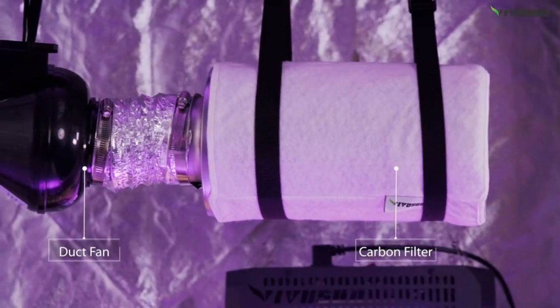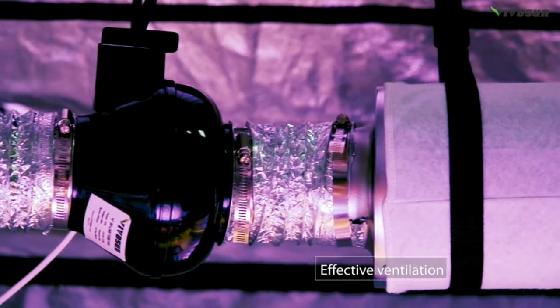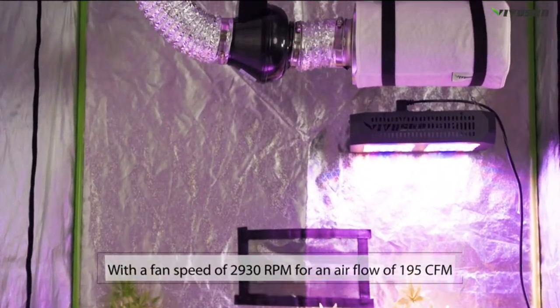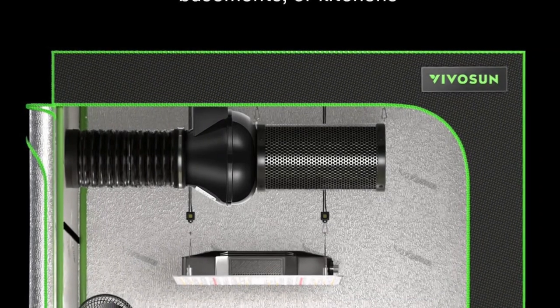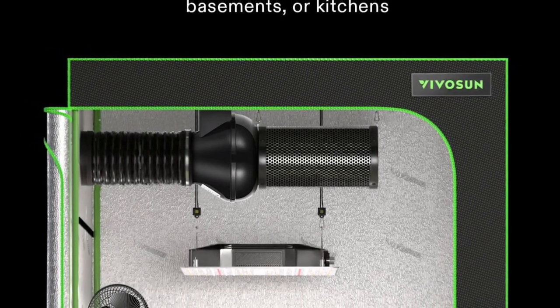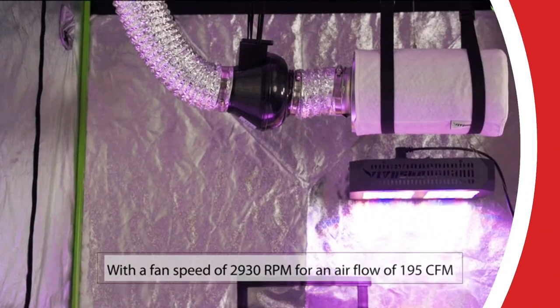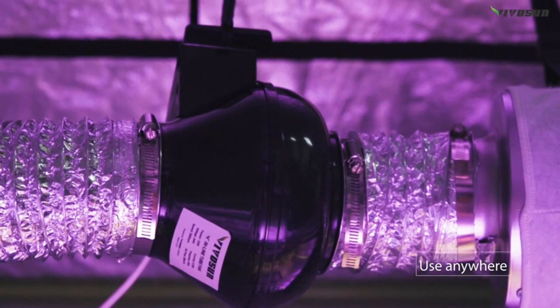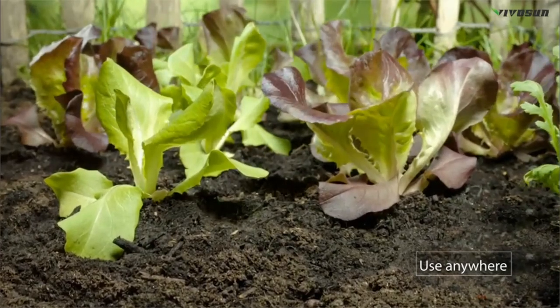You can use this inline fan in pretty much any application that'll take a 4-inches fan. You might find that bathrooms and kitchens have larger duct work, meaning you'd need an adapter to fit it properly. One way Vivosun saves money on this model is by selling the speed controller separately. Luckily, it's not very expensive but is worth buying if you want to adjust the fan's speed. Using it with the fan provides 4-speed settings.